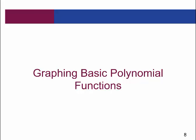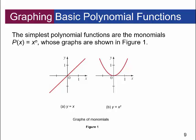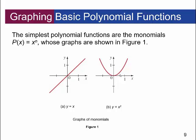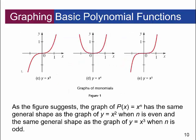Let's graph some basic polynomial functions. The simplest polynomial functions are monomials of the form p of x equals x to the n. When n equals 1, you have a straight line. When n equals 2, you have a u-shaped parabola. When n equals 3, you have a cubic shape. When n equals 4, you have a u-shape that's a bit flatter at the bottom. When n equals 5, you also have this cubic shape.